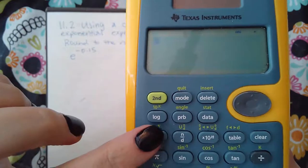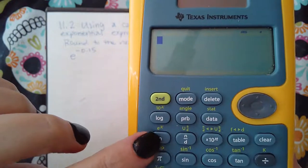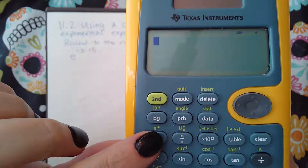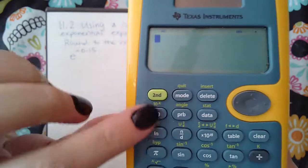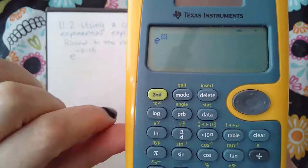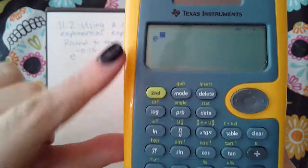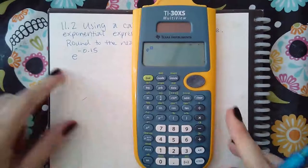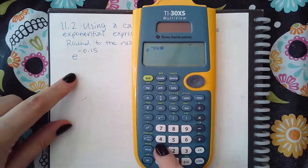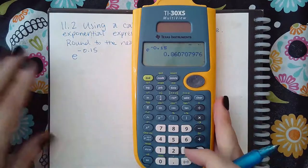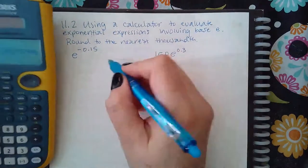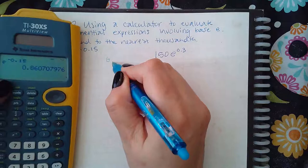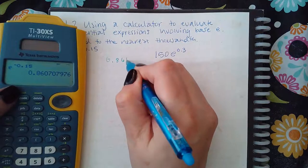You see the E button right there, and it will automatically open up an exponent for me. If I hit second and then I hit that E button, see how it already opens up the exponent? So then I can type in negative 0.15, and it will evaluate that for me. Round to the nearest thousandth is 0.861.